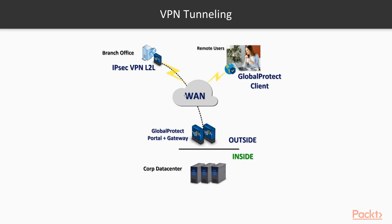We cannot establish an on-demand tunnel or remote access VPN for this type of scenario because we need always-on connectivity. Another example is peering with a partner who is providing services to you. So you need to build a site-to-site tunnel, configure your peers — we're going to discuss what peers are and how to configure them in Palo Alto — establish that tunnel, and encrypt that traffic.